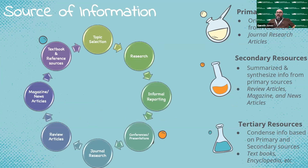Primary sources are the original source for the information — the first person right next to the information. You get those directly from journal articles. Of course, those articles will pull from other types of resources, but primary sources are always the best to start with. When you're doing a research project, you're selecting your topic, conducting your research, doing informal reporting, and presenting — such as at our expo at the end of the semester.